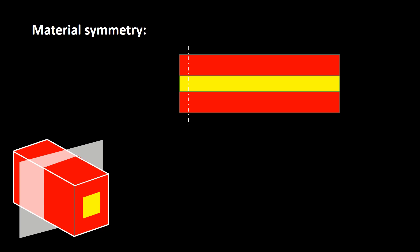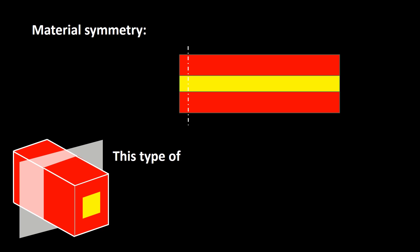Before introducing the subcategories of anisotropic materials, we should understand the meaning of material symmetry. Consider a material whose composition is symmetric with regard to a plane. This symmetry means the composition is also symmetric to all planes parallel to that plane. Note that this kind of symmetry is related to the composition of the material — geometry is not important.